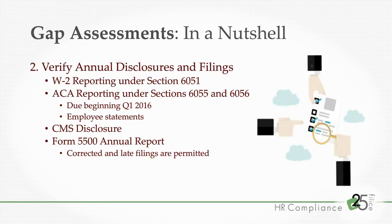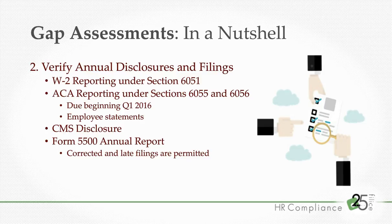Step two is to verify your annual disclosures and filings. At this point, you want to go back at least four or five years and audit yourself to make sure all necessary disclosures and filings were made in a timely fashion and that the information included is accurate. First, we have W-2 reporting under Section 6051 of the Affordable Care Act. This applies only to employers that filed 250 or more Forms W-2 in the prior year. If that's you, you're required to include on the employee's W-2 the aggregate cost or value of the health benefits provided to that employee that year.